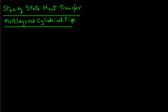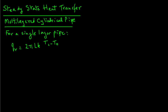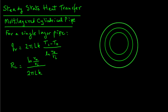We have two layers, so we will first recall that for a single layer pipe, the rate of heat transfer qr was equal to 2πlk times (Ti minus To) divided by the natural log of ro over ri. This was obtained in the previous module. Using the thermal resistance concept, the conduction resistance Rc for a single layer pipe is the natural log of ro over ri divided by 2πlk.